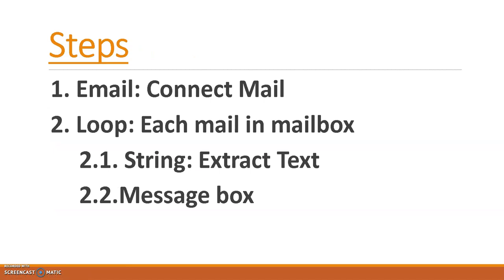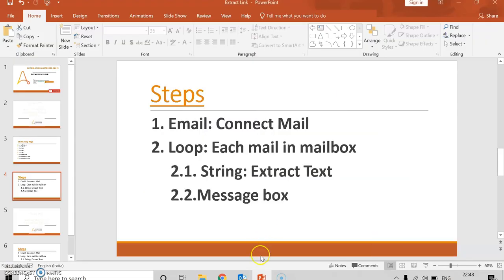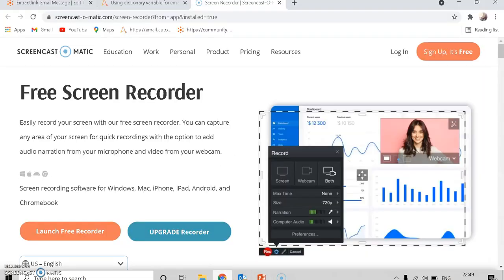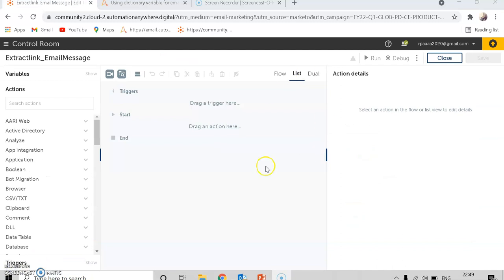These are the dictionary keys available in Automation Anywhere. The steps we are going to see for extracting the text: first step is connect the email, then loop through each mail in the mailbox, then use the string function to extract the text, and then show it in the message box. Let's move on to the bot now.